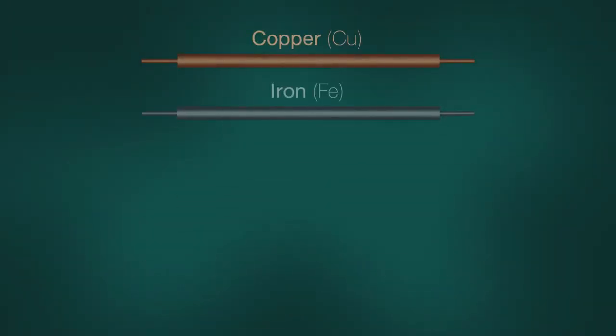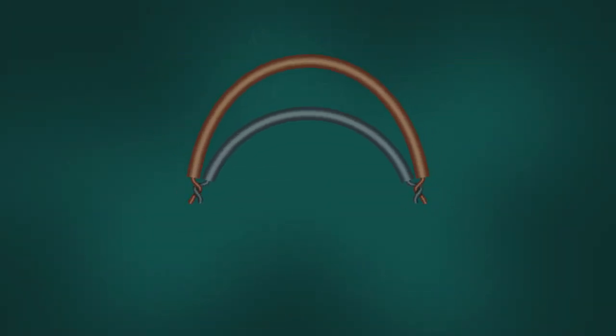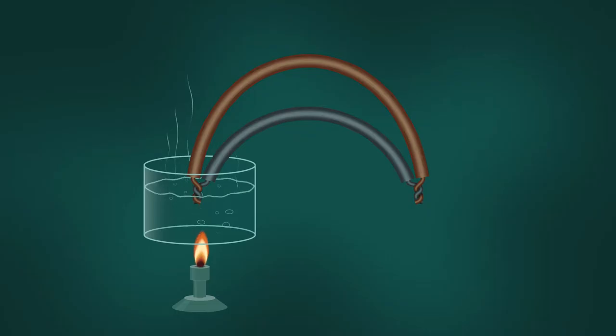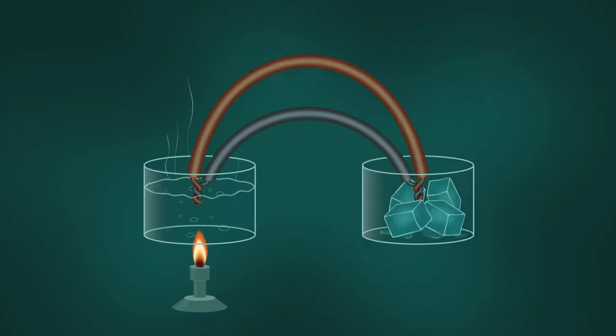It turns out that electrons in the materials flow from the heat source, or the hot side, to the colder side.